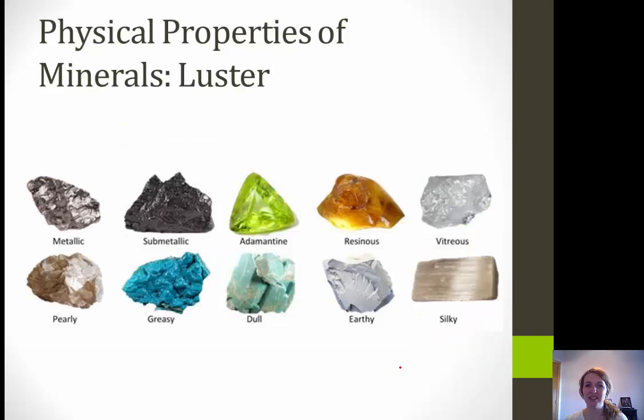These are other examples of luster. We have metallic — and if it's not as brilliant and shiny as it could be for a metal, you can refer to it as submetallic. Then there are all these other options: resinous, vitreous, pearly, greasy, dull, earthy, silky — lots of options.